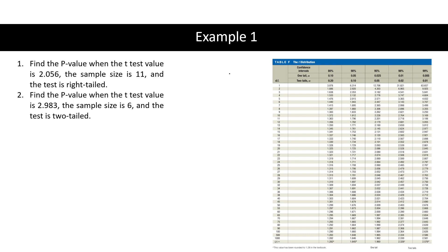Let us have the first condition: find the p-value when the t-test value is 2.056, the sample size is 11, and the test is right-tailed. The given t-test value is 2.056 and n = 11. Since we're looking for the closest value to 2.056, the degrees of freedom is df = n − 1 = 11 − 1 = 10. So we look in the table at df = 10.